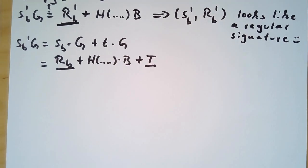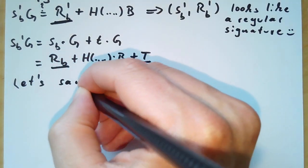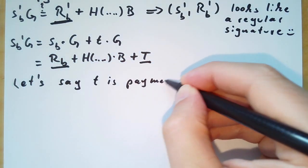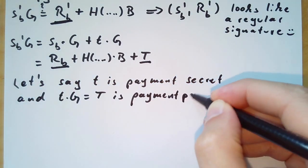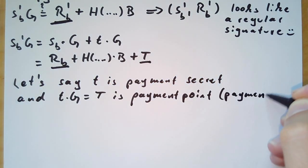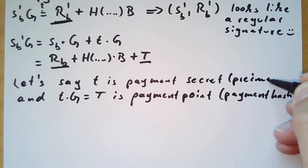Let's add some notations. We call t, small t, as the payment secret, and small t times g equals big T, the payment point, which is previously the payment hash, and the payment secret obviously would be the pre-image.